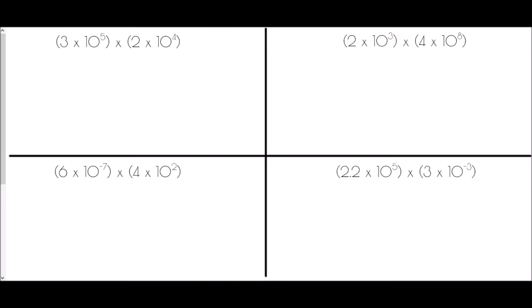We're going to begin by doing some multiplication of values written in standard form. To do this, we're going to break the questions into two pieces: the two values being multiplied, and then the powers of 10. So the first part is we just need to do 3 times 2, which gives 6. The times sign stays in the middle — it's an important part of standard form, where there is always a number between 1 and 10 multiplied by 10 to the power of something.